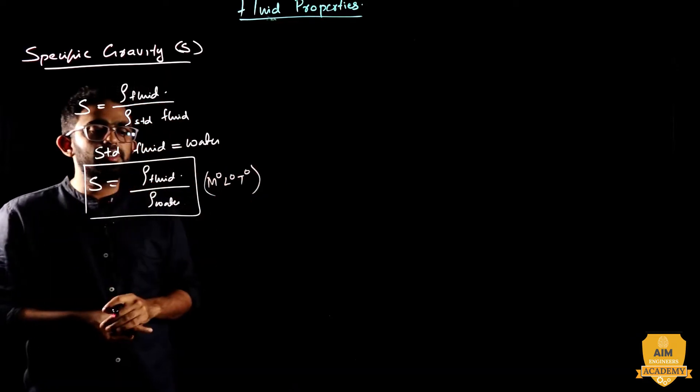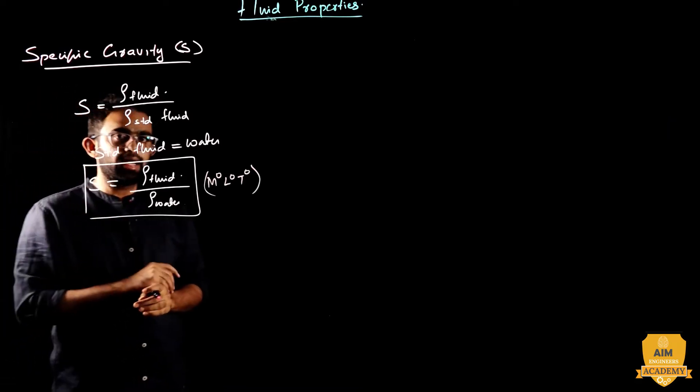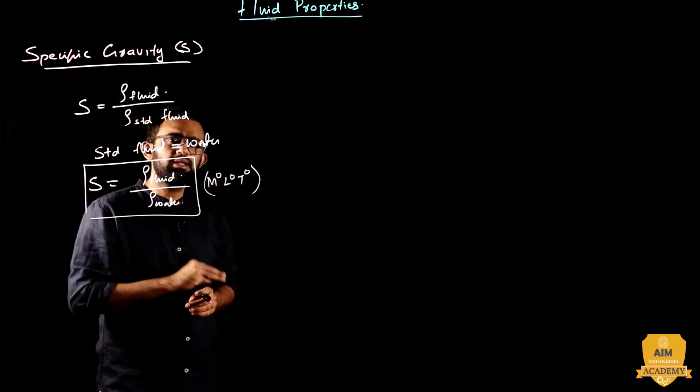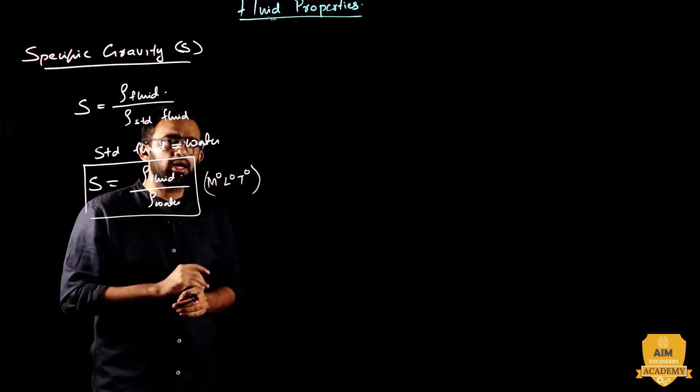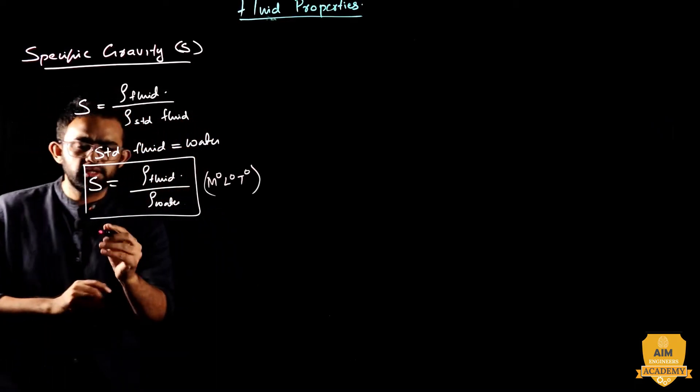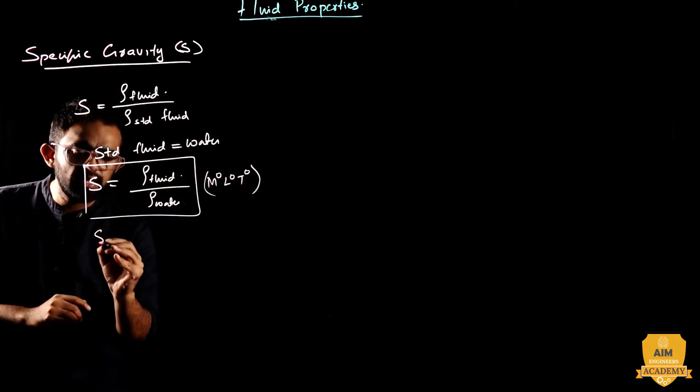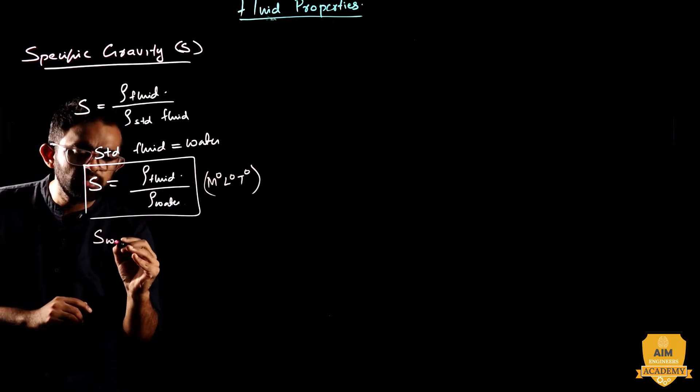It is the dimensionless nature of specific gravity. So, the specific gravity of water — density divided by density gives a dimensionless result.